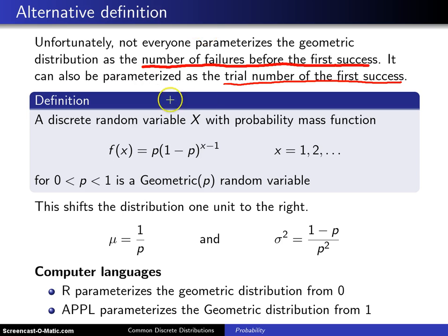So this is still the geometric distribution, but this time its support is 1, 2, 3, 4. So in some cases, it's best to look at the number of failures before the first success. And in some cases, it's best to look at the trial number of the first success.